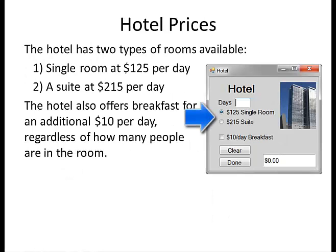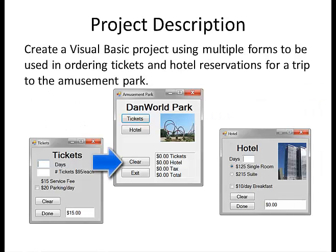The hotel form has two types of rooms available: a single room at $125 per day and a suite at $215 per day. The hotel also offers breakfast for an additional $10 per day regardless of how many people are in the room. The main form is to display the subtotal for the park admission and hotel charges each time one of the sub forms is completed. The main form is also to compute tax at 8.75% and display the total charges. Clear buttons are to be placed on each form, and the clear button on the main form is to clear the data from all the sub forms.